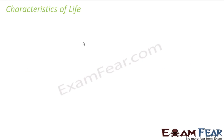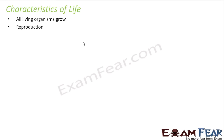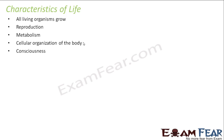What characterizes life? How do we know that an object is living or non-living? There are certain things which characterize life — present in living things and not seen in non-living things. Some of them are: all living organisms grow, reproduction, metabolism, cellular organization of the body, and consciousness. So these are some of the things which characterize life, and I will discuss each of them in detail one by one.